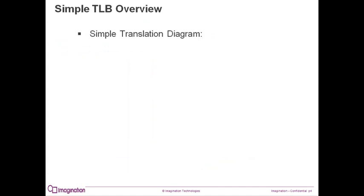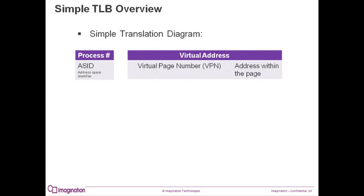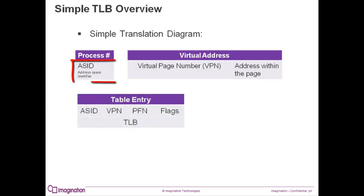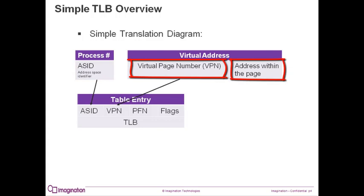We will now go through a simple TLB translation. When an address is accessed by a process, the TLB uses two different things to find the correct internal table entry: the virtual address itself and the process's address space identifier, or ASID. The ASID will cause the lookup to be valid for entries that match only the current process's entries. The virtual address is broken down into two pieces: the virtual page number and the address within the page. This breakdown allows the TLB to map large areas of memory with just one entry.